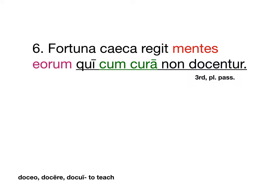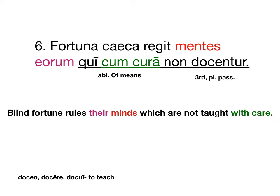And then how do we translate Docentur? Hopefully you are recognizing that it's from Doceo, Doceri, Docui, which means to teach. And here it is third person plural passive. So we're going to end up with something like: Blind Fortune rules their minds — actively rules their minds. We can translate Aorum as their, or the minds of them, which are not taught with care. So Qui's antecedent is the minds, and it's the subject of its relative clause — which are not taught.